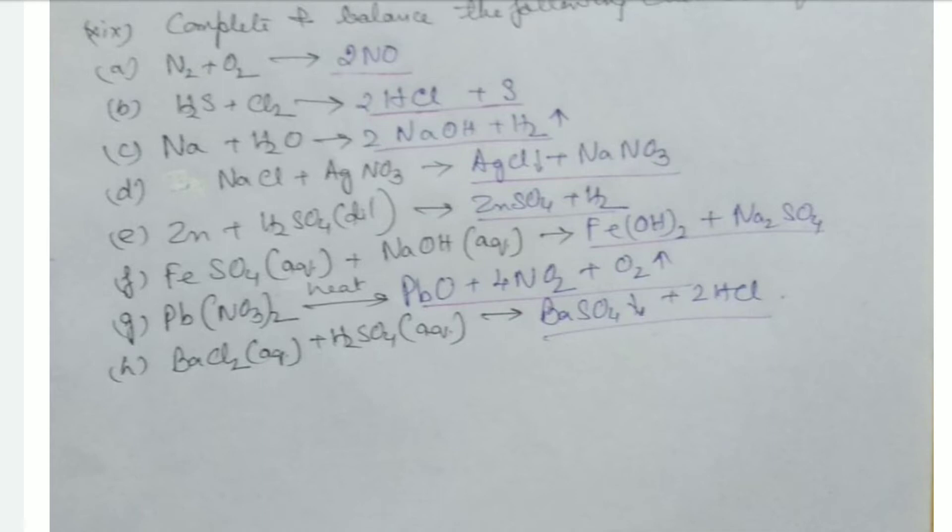Pb(NO3)2 when heat is given it will form PbO plus 4NO2 plus O2 will be evolved. Then barium chloride BaCl2 aqueous solution will react with H2SO4 aqueous solution to form BaSO4 as a precipitate and 2HCl will be formed.